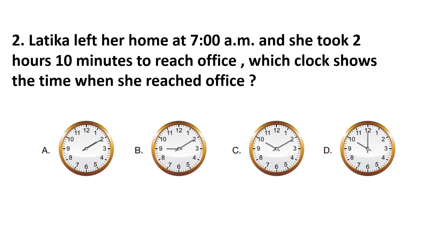Question 2: Latika left her home at 7 a.m. and took 2 hours 10 minutes to reach the office. Which clock shows the time she reached the office? We add 2 hours to 7 o'clock: 7 plus 2 is 9. Then 10 more minutes gives 9:10. Clock 2 shows 9 o'clock 10 minutes. Answer: option B.